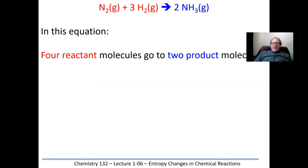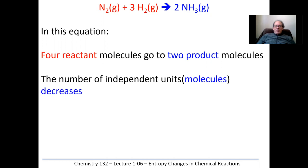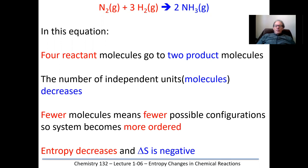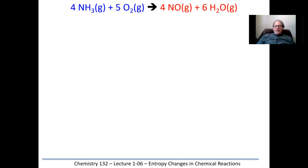We have four moles of reactants on the left and two moles of products on the right. You can see the entropy is decreasing here — fewer numbers of molecules mean a more ordered system. Four reactant molecules become two product molecules, so we're having a decrease in the number of moles. Fewer molecules means fewer possible configurations, so the system is becoming more ordered. Since the entropy decreases, delta S must be negative. There must be something else driving this reaction.